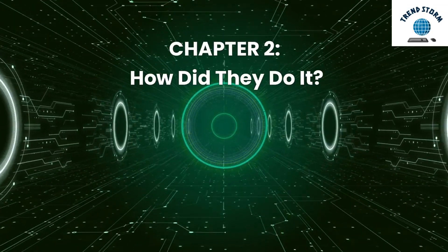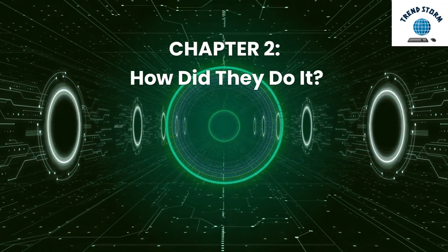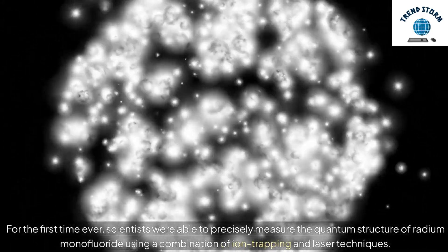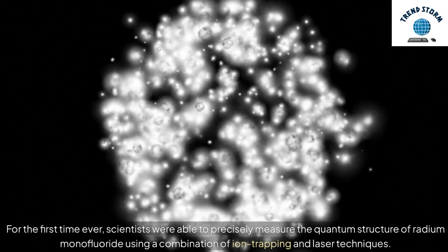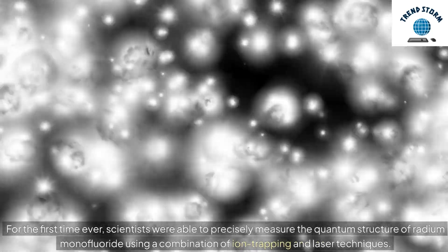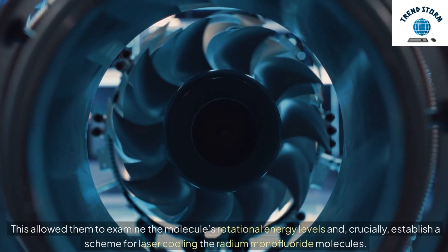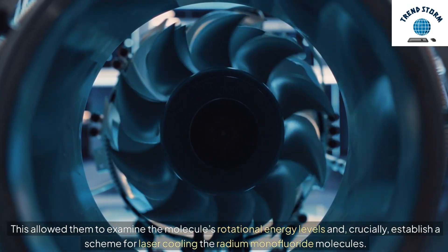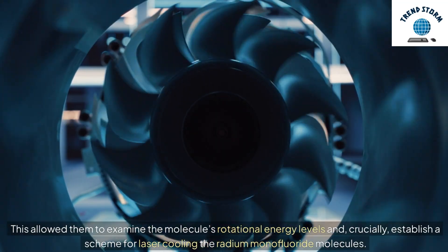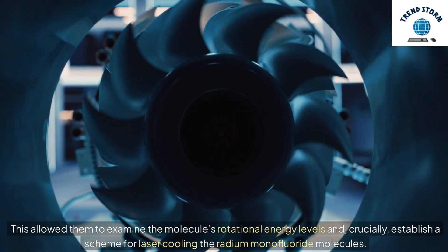Chapter 2: How did they do it? For the first time ever, scientists were able to precisely measure the quantum structure of radium monofluoride using a combination of ion trapping and laser techniques. This allowed them to examine the molecule's rotational energy levels and, crucially, establish a scheme for laser cooling the radium monofluoride molecules.